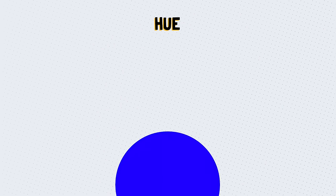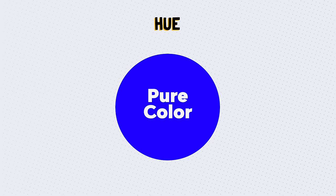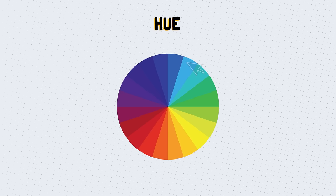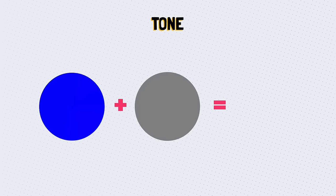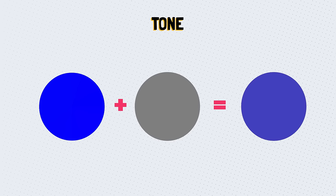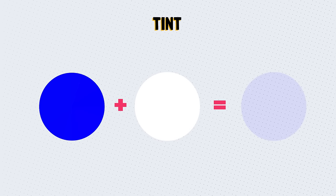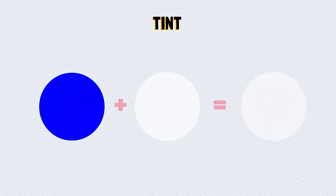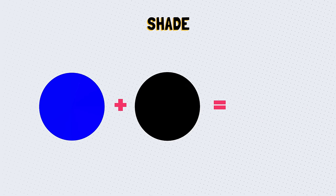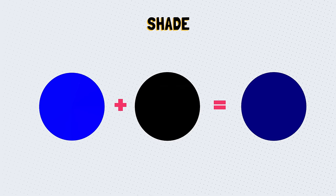Hue is a way to describe a pure color without tint or shade — that means without added white or black. Any color on the color wheel is a hue: blue, yellow, red. Tone refers to a hue with added gray, which lowers the intensity of color and can make it dull. Tint refers to a hue with added white to lighten it and make it paler. Shade refers to black added to a color — the opposite of tint — which will darken it.